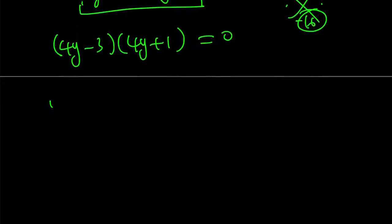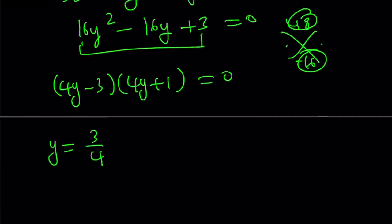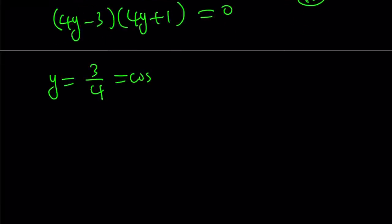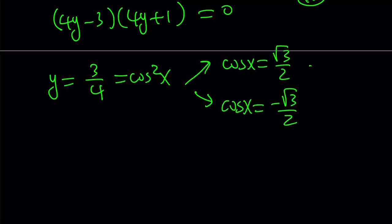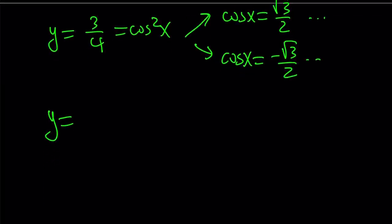So y is going to be from the first one, 3 fourths. But remember, y is cosine squared. So cosine squared equals 3 fourths implies two things. Either cosine x is equal to root 3 over 2 or cosine x is equal to negative root 3 over 2. And obviously, if you just keep doing this, you're going to get the same solutions as before. So I'm not going to repeat them.